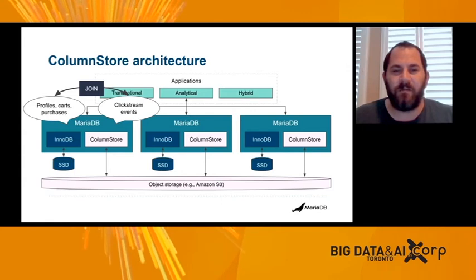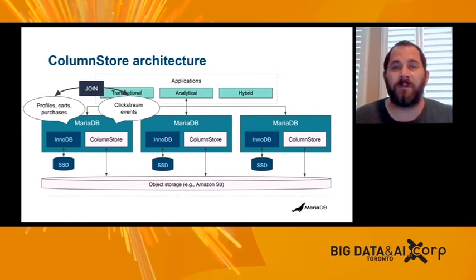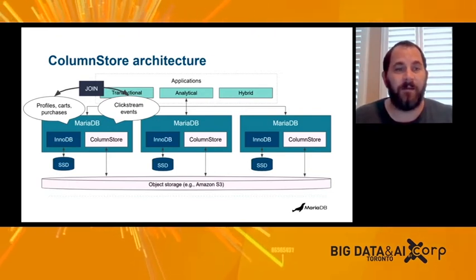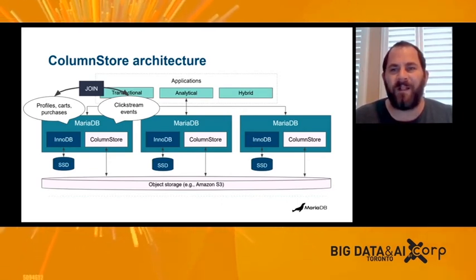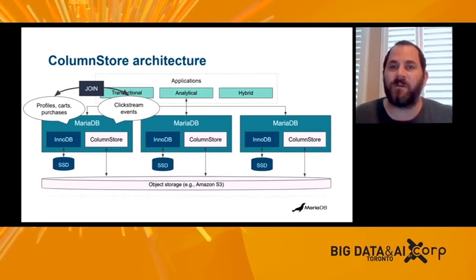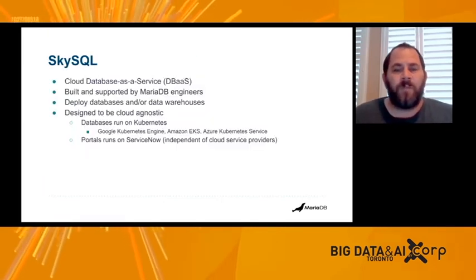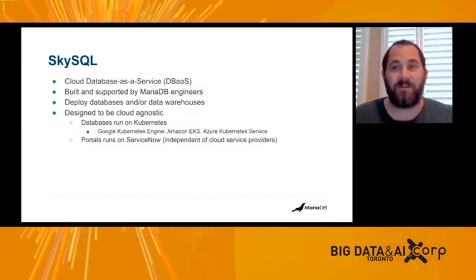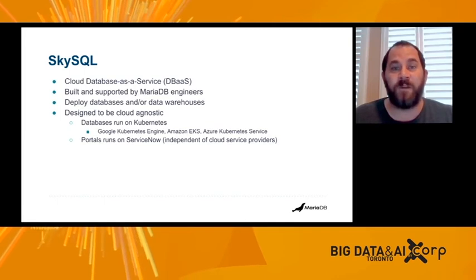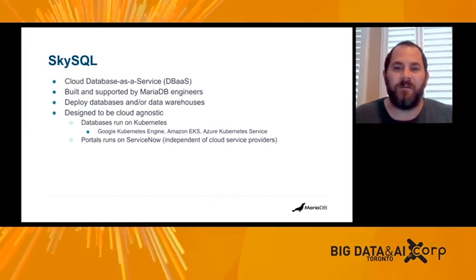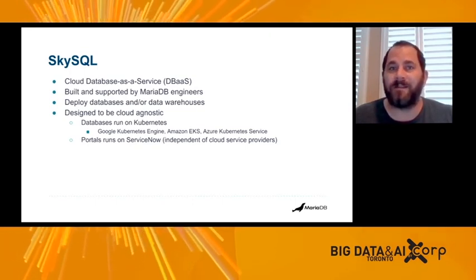We also see customers having current data in InnoDB and historical data in ColumnStore. You might want three months of data in InnoDB — it'll fit on the SSD and be very fast — while anything beyond three months is moved to ColumnStore and available for analytics. And now is right about the time we can circle back to the cloud. We talked about object storage, open source, HTAP — bridging the gap between transactions and analytics — and getting rid of ETL.